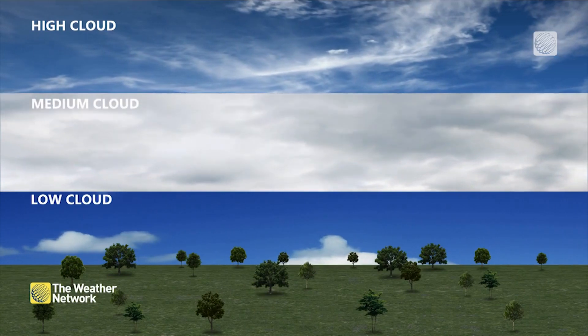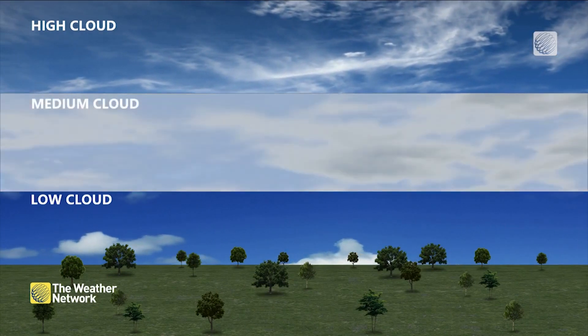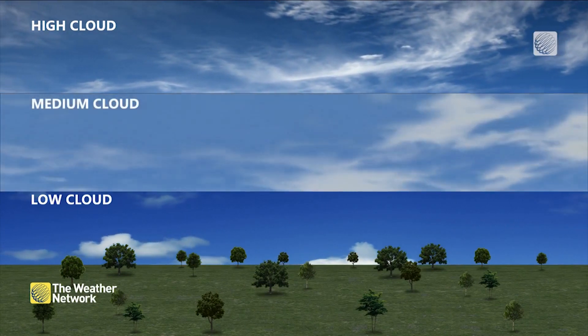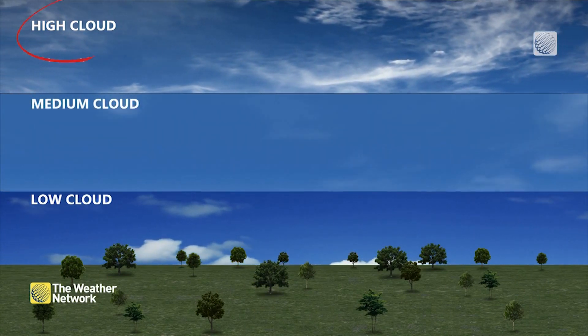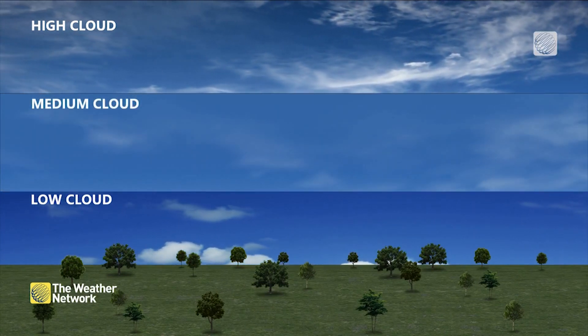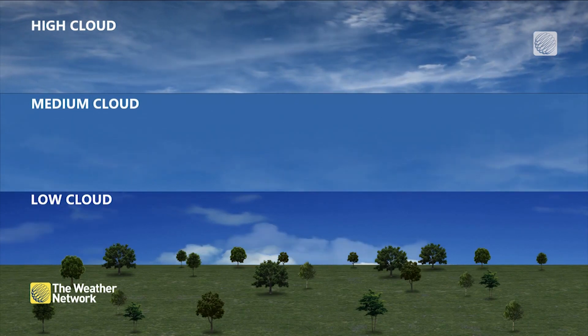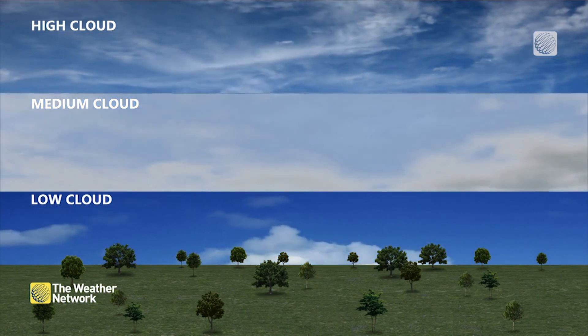In our atmosphere we have clouds at three different levels: low, medium, and high. They could impact your sky views in different ways.